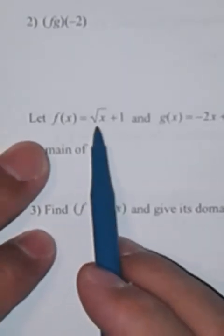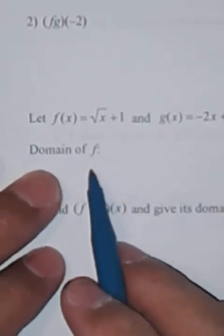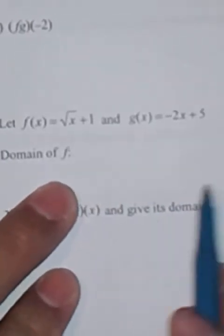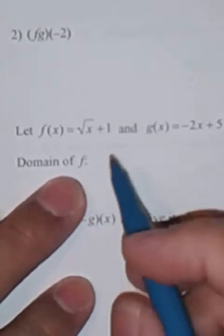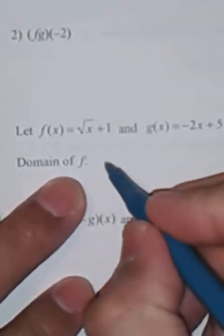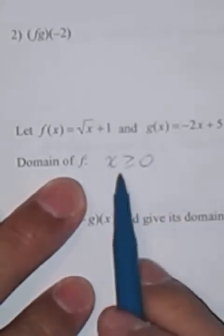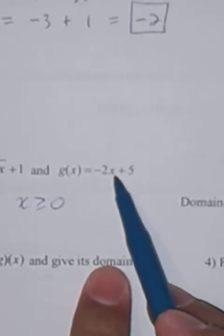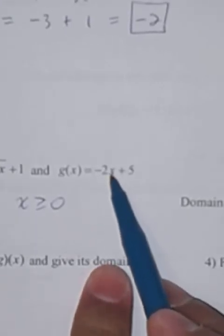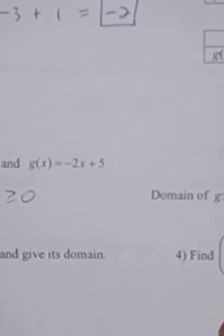Let f of x be the square root of x plus one, and g of x be negative two x plus five. First, let's find the domain of each separately. The domain of f is — when you have a square root, whatever's under the square root has to be greater than or equal to zero, so x has to be greater than or equal to zero. The domain of g — when you don't have a square root and you don't have a fraction, it's just a polynomial function — is all real numbers from negative infinity to infinity.